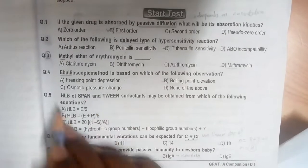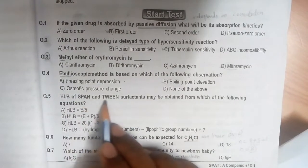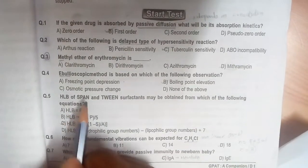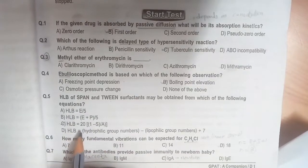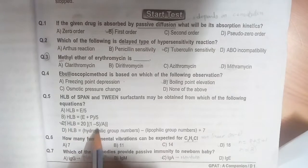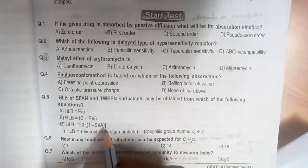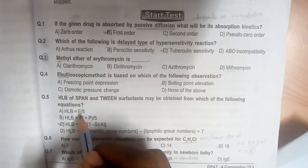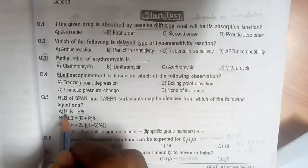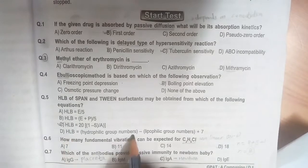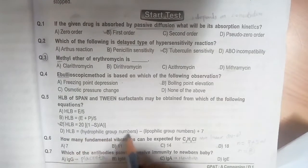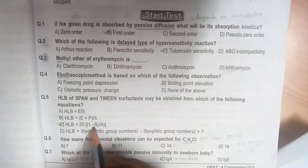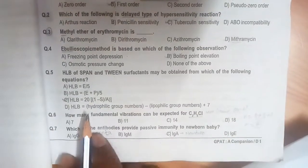Next: HLB of SPAN and TWEEN surfactants may be obtained from which of the following equations? All are correct only, but for SPAN and TWEEN they have saponification value, so the answer is 20 minus S/A. Those who do not have saponification follow E plus P/5. Polyethylene oxide substances follow E/5 value. If the question gives hydrophilic group number and lipophilic group number, we use that formula. But our question is SPAN and TWEEN, so we go for 20 minus A. Option C is the right answer.